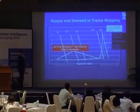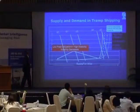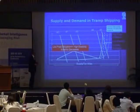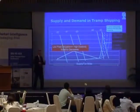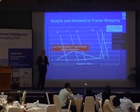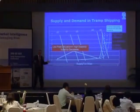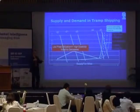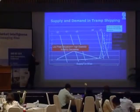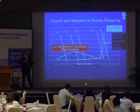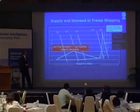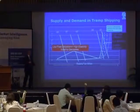The relationship between vessel size and elasticity is inverse. Because the number of Capes is much smaller than the number of Handies, the liquidity is smaller, and hence the inelasticity will be even greater.